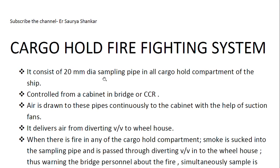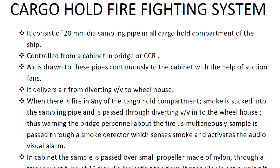The system consists of a 20 mm diameter sampling pipe in all cargo hold compartments of the ship. This is important — a 20 mm dia sampling pipe goes to all cargo hold compartments. This system is controlled from a cabinet on the bridge or CCR (Cargo Control Room). Air is drawn through these pipes continuously to the cabinet with the help of suction fans — similar to the Oil Mist Detector (OMD). Samples are drawn from different cargo hold compartments using the suction fan.